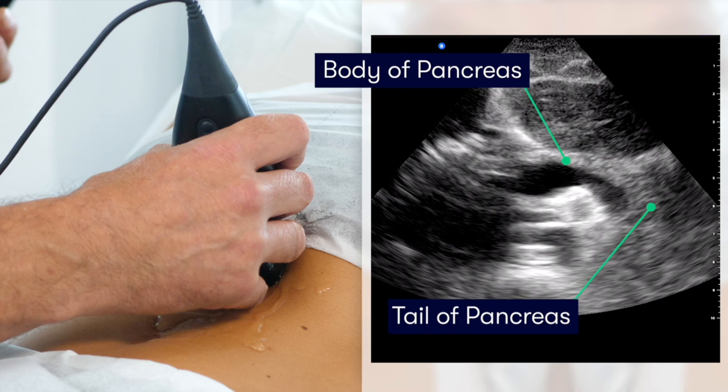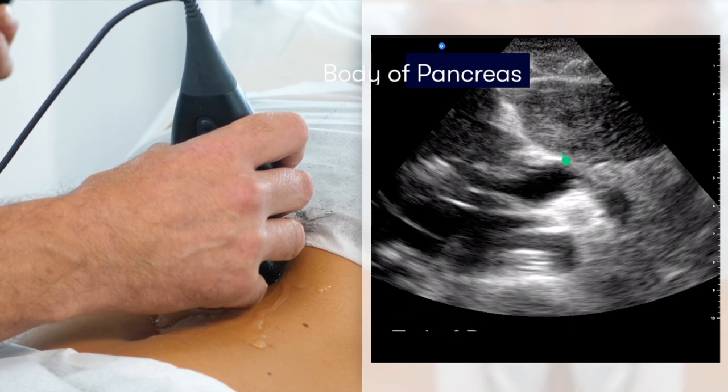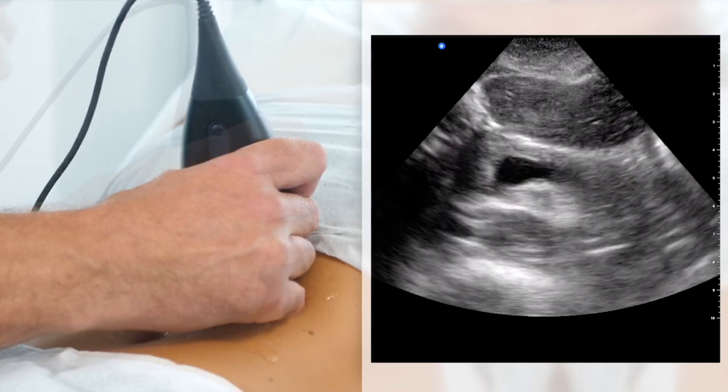So there we have the body of the pancreas located in the midline, and we can also see the tail of the pancreas, which is not always easy to identify in some patients as the stomach often obscures our view. But in this patient, we're able to see the tail of the pancreas really nicely.